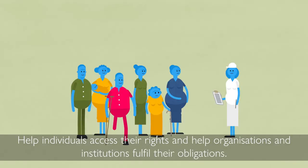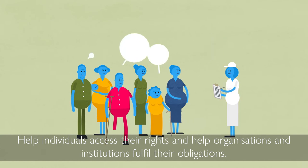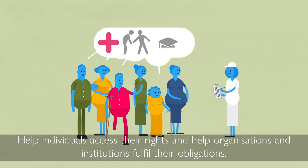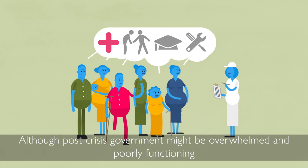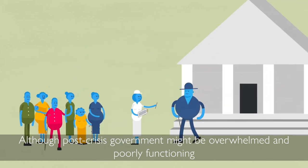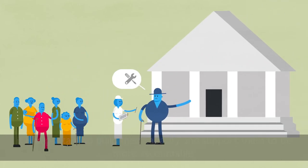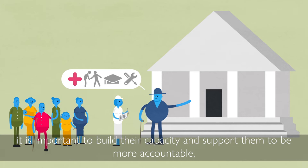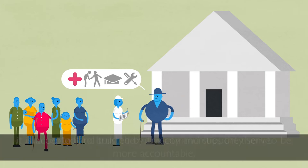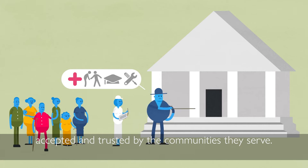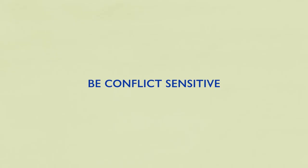Be rights-based. Help individuals access their rights and help organizations and institutions fulfill their obligations. Although a post-crisis government might be overwhelmed and poorly functioning, it is important to build their capacity and support them to be more accountable, accepted, and trusted by the communities they serve.